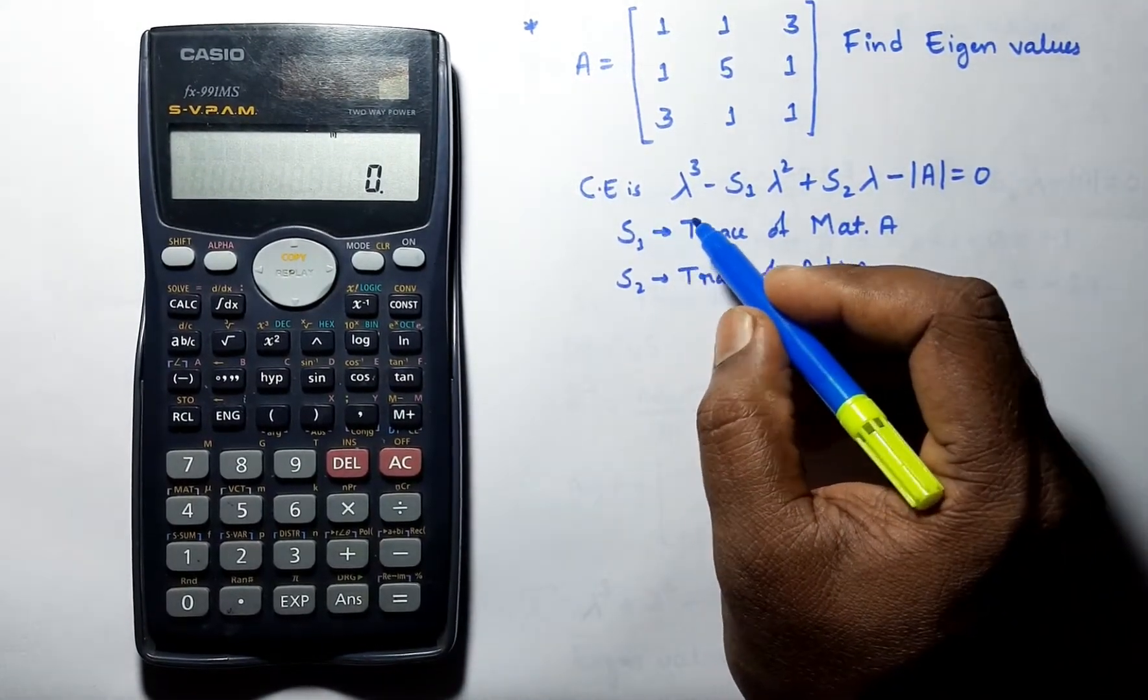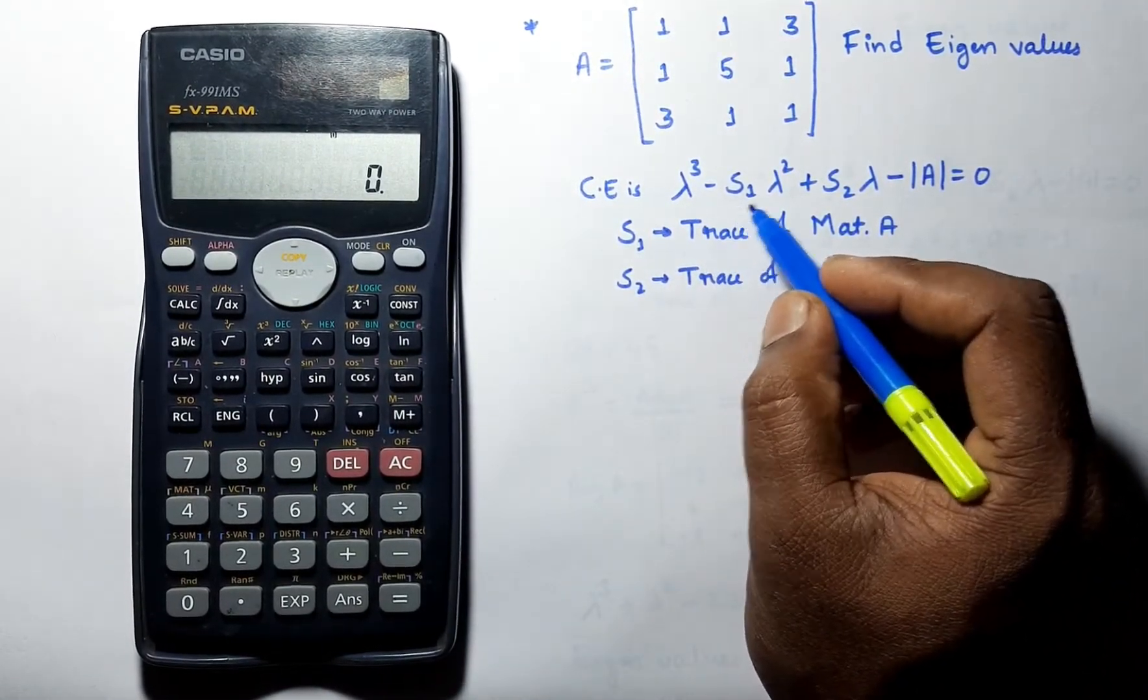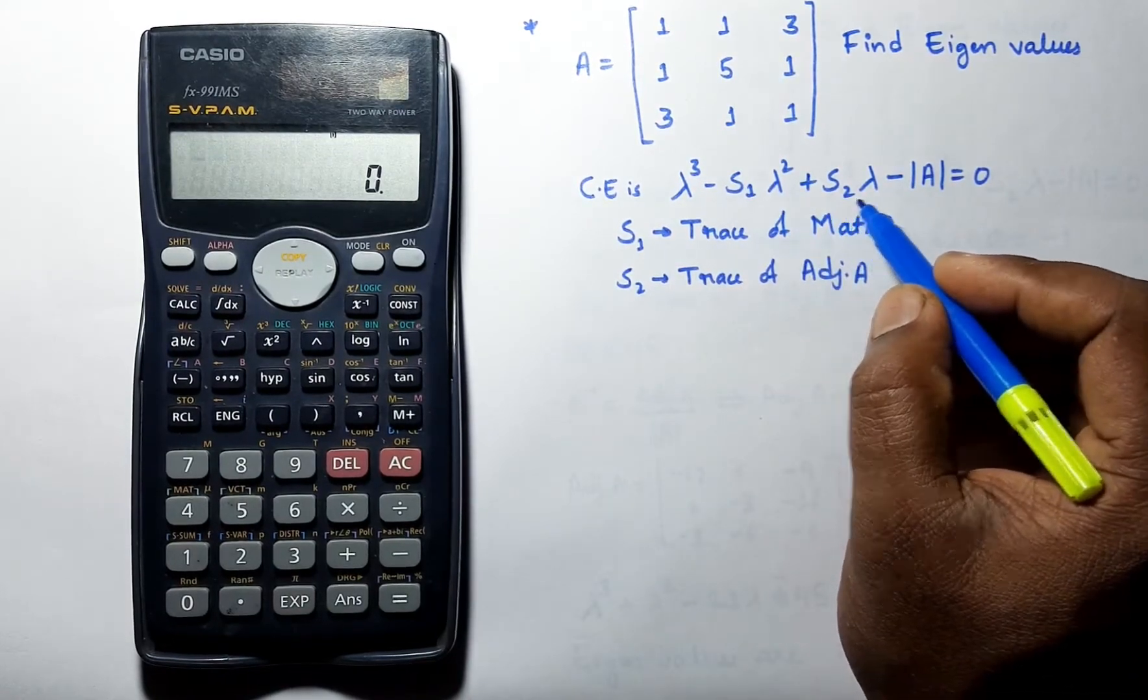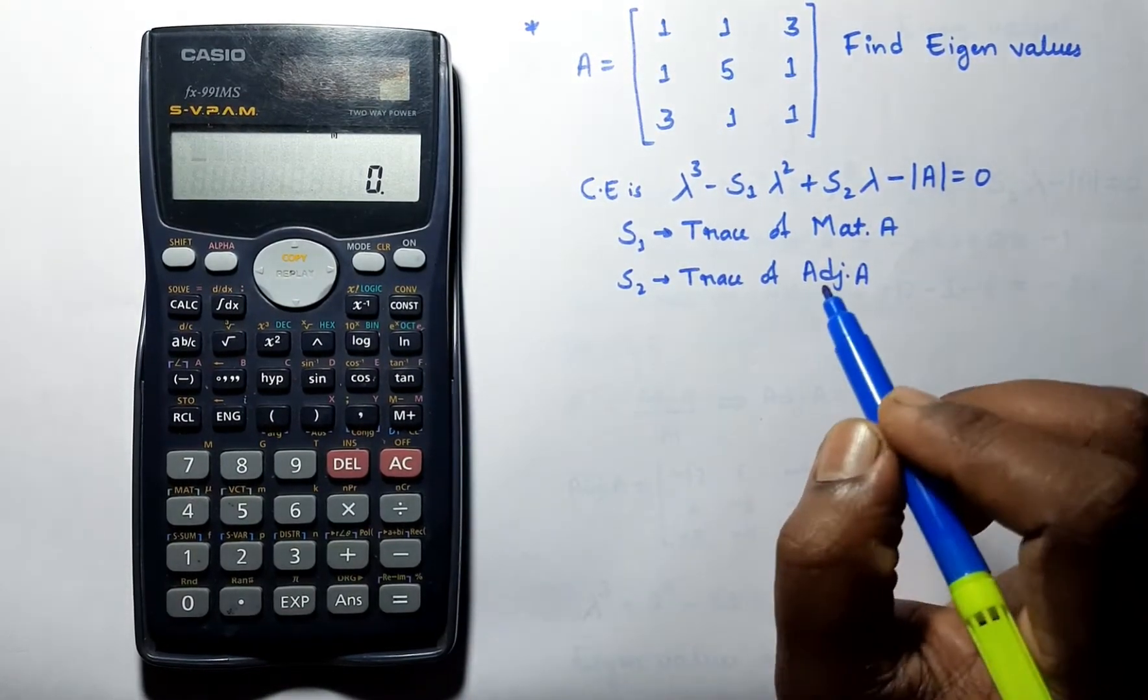We have this characteristic equation which is lambda cube minus S1 lambda square plus S2 lambda minus determinant of A is equal to 0.